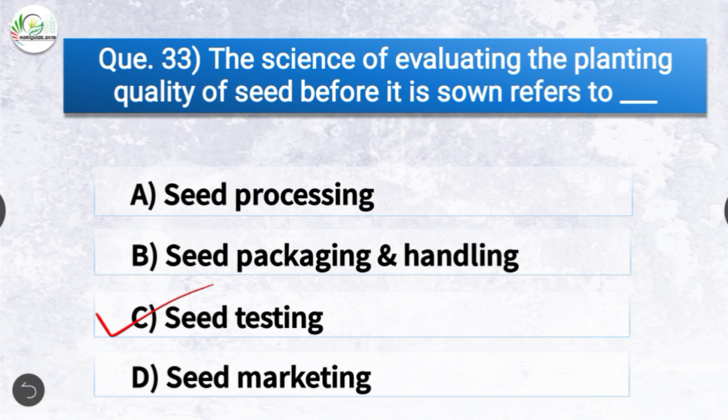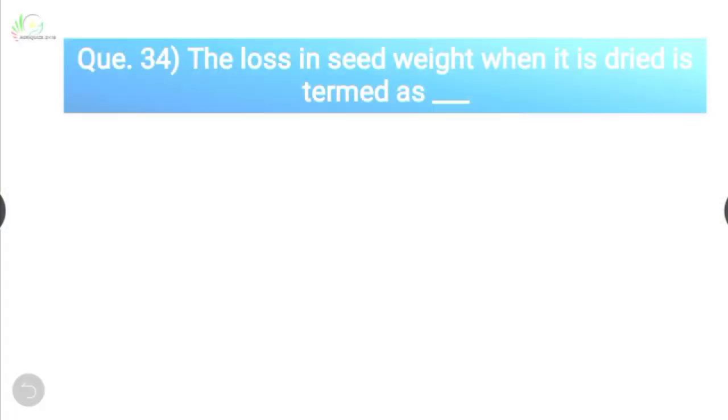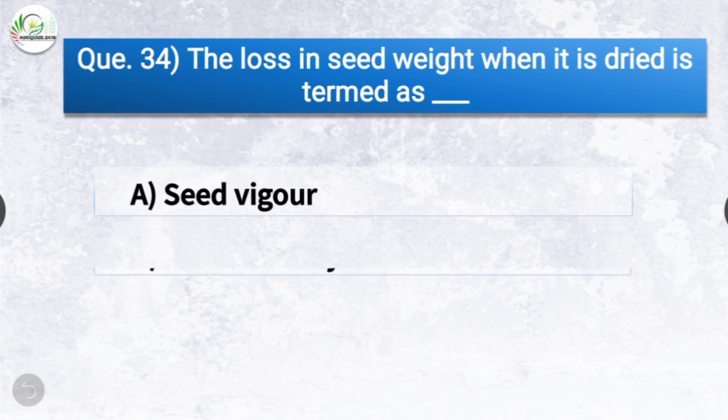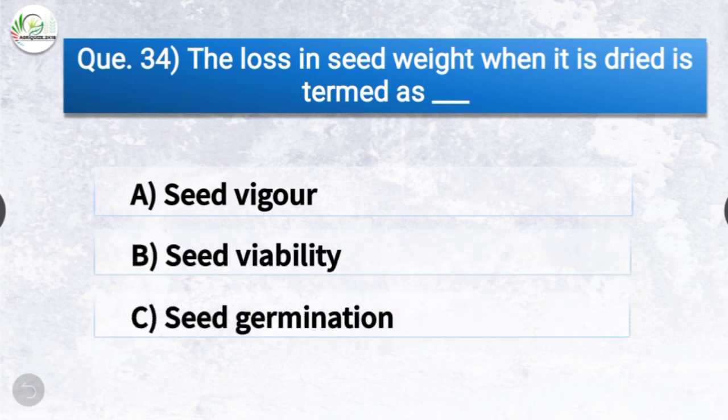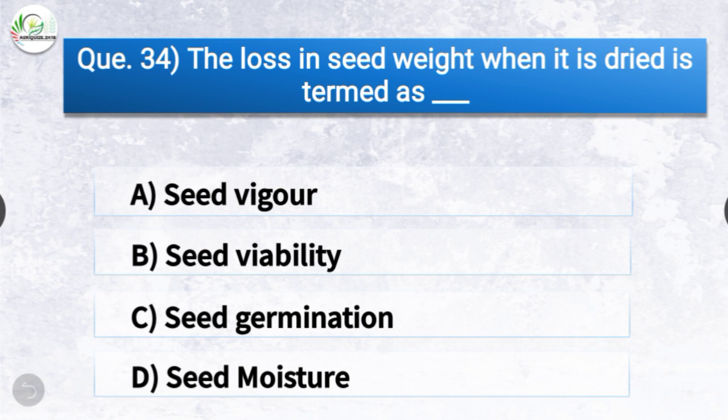Question number thirty-four: The loss in seed weight when it is dried is termed as — the options are seed vigor, seed viability, seed germination, or seed moisture. The correct answer is option D — seed moisture. The loss in seed weight when it is dried is termed as seed moisture.